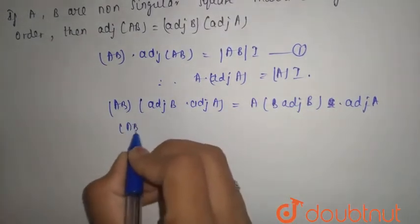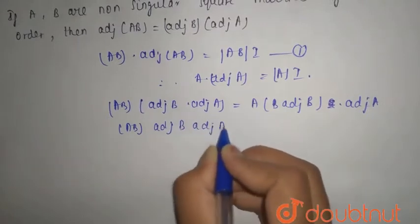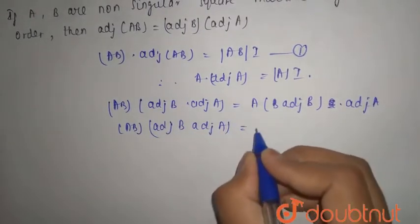So AB as it is, this will be adjoint of B adjoint of A, and here you can write A.